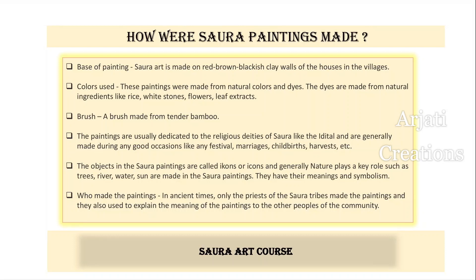In Sora paintings, icons are very important and nature plays a very significant role. You will see the presence of many nature elements like rivers, trees, water, and the sun, all of which carry their own meanings and symbolism. In ancient times, only the priests of the Sora tribe made these paintings, and after completing them, they would explain the detailed meanings to all the other people of the community.